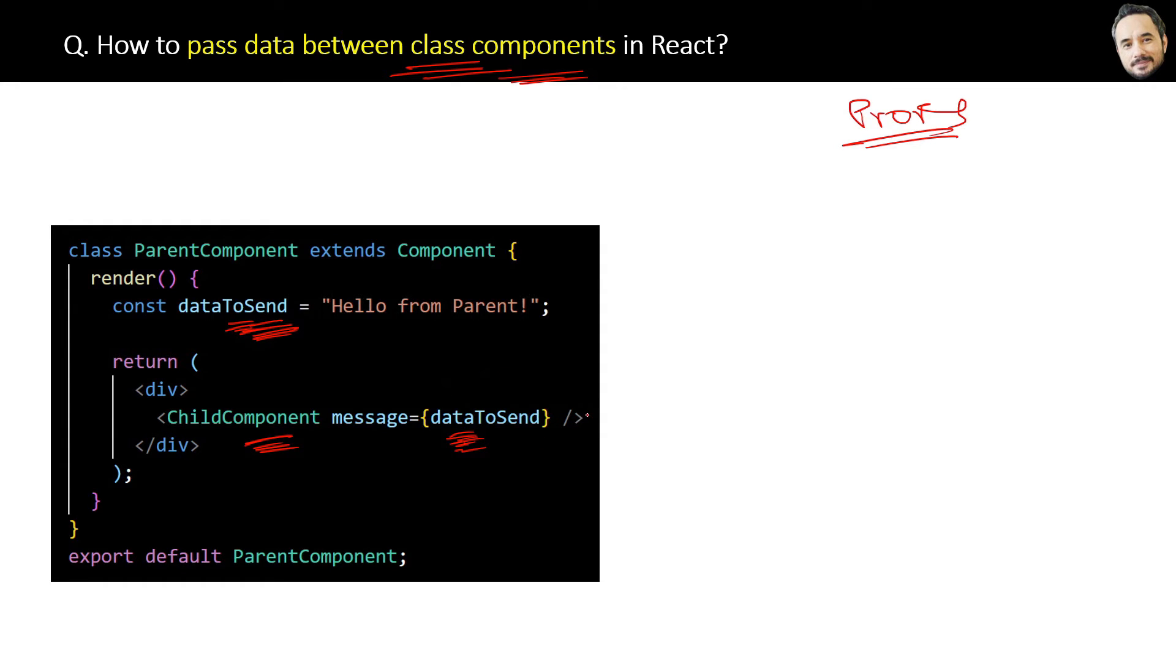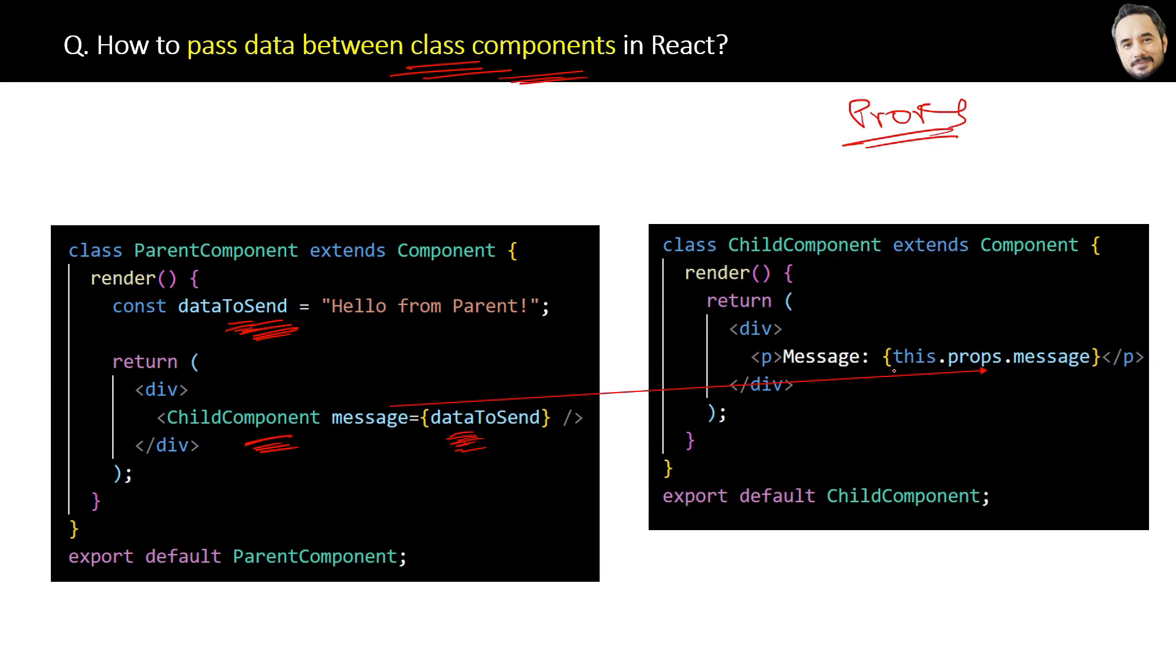Then in the child component like this, we can receive the data by using this.props.message, which is the attribute name.